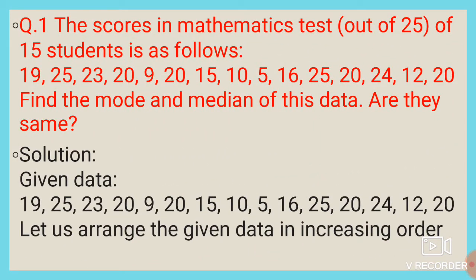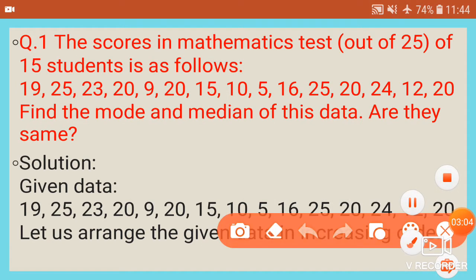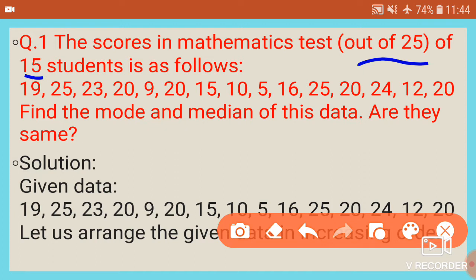Start with Exercise 3.2, question number 1. The scores in mathematics test out of 25 of 15 students are as follows: 9, 19, 25, 23, 20, 20, 15, 10, 5, 16, 25, 20, 24, 12, 20.